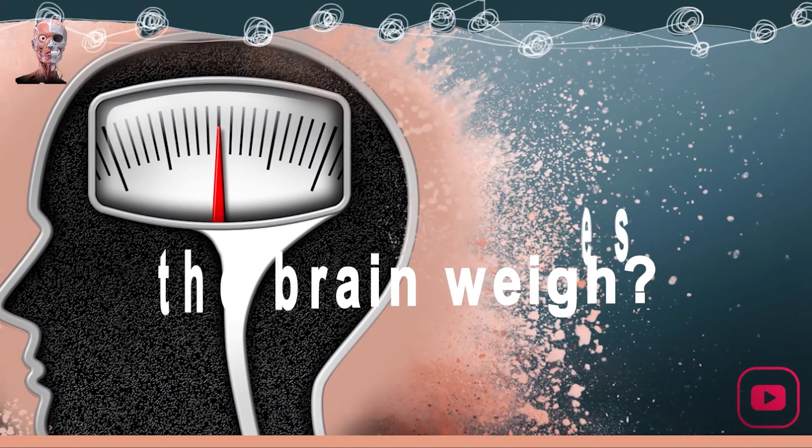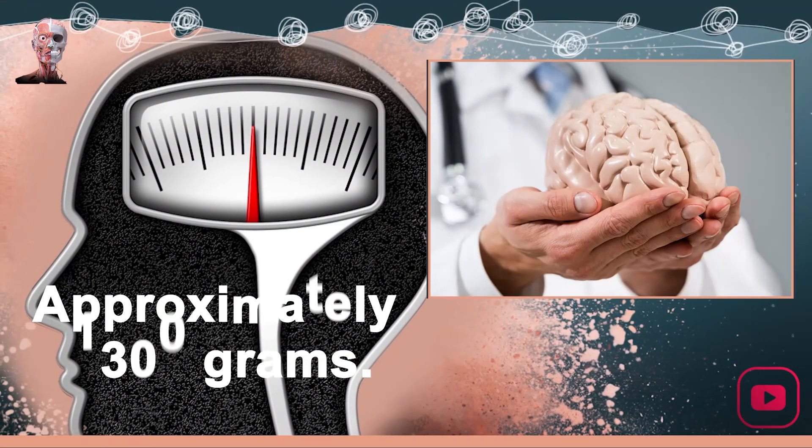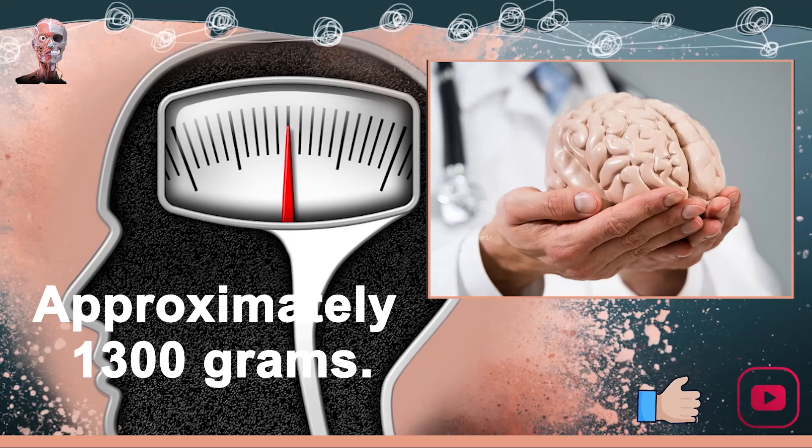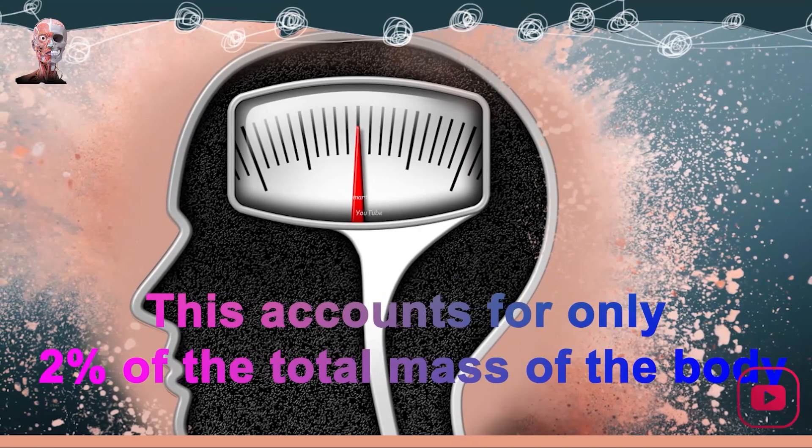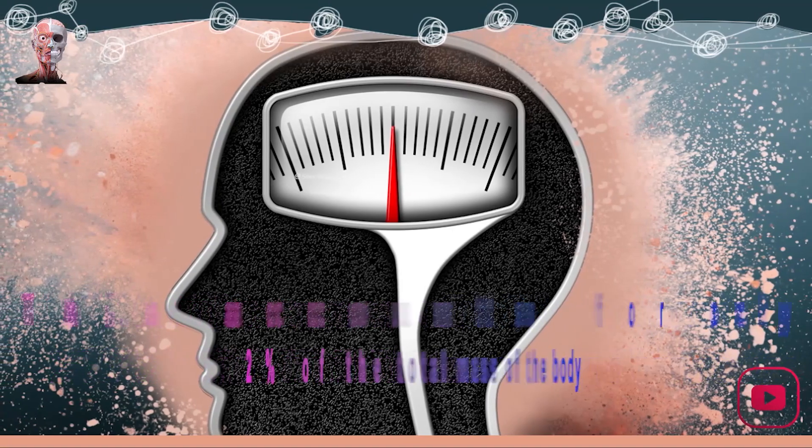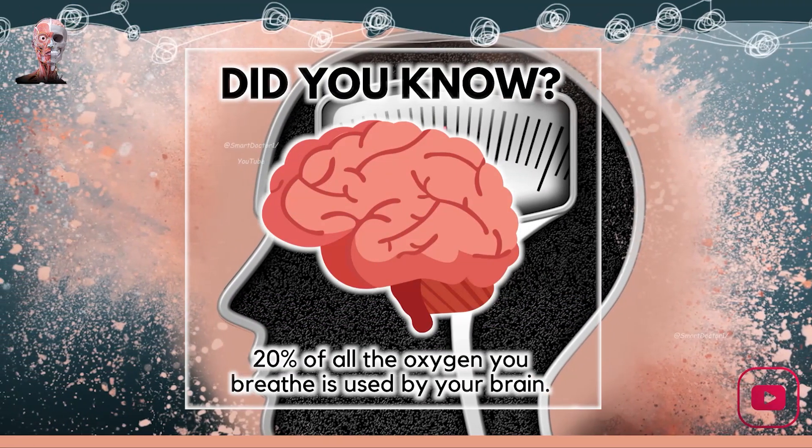How much does the brain weigh? In adults, the average mass of the brain is approximately 1,300 grams. This accounts for only 2% of the total mass of the body, while the brain uses up to 20% of the body's energy.